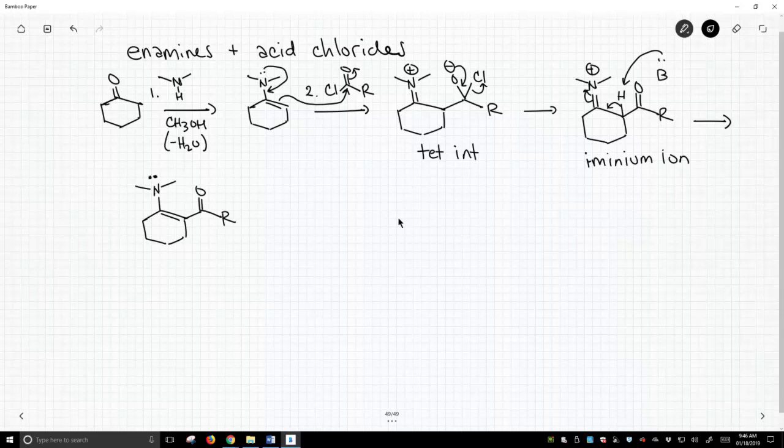So this nitrogen lone pair is in resonance with a double bond, which is in resonance with the carbonyl, so it connects everything. And iminium ions aren't always deprotonated, but when they have a carbonyl next door, they quickly get deprotonated.